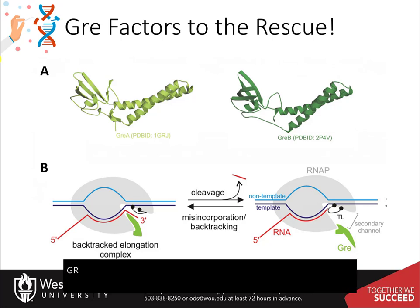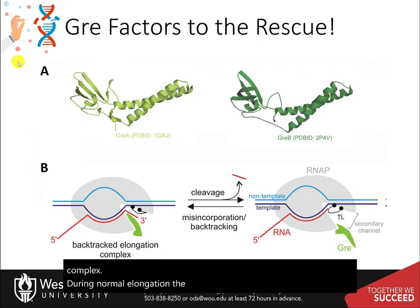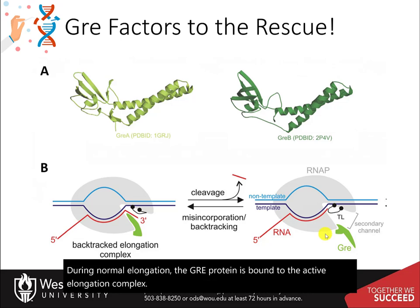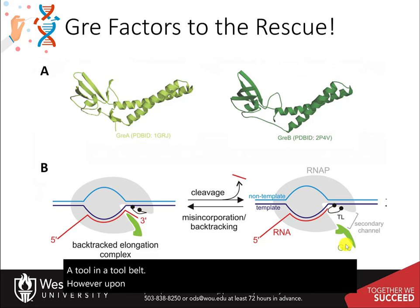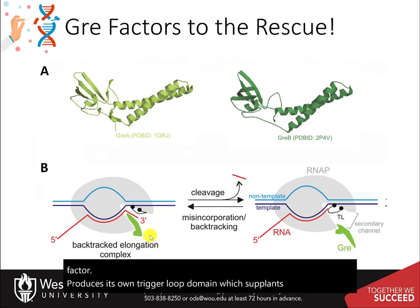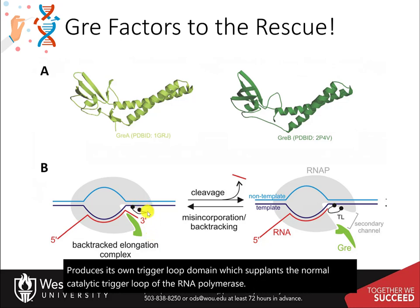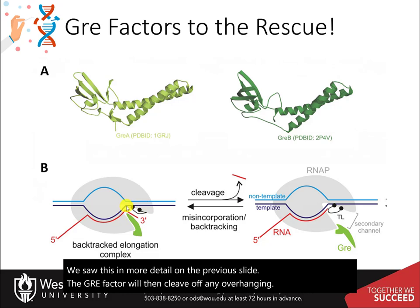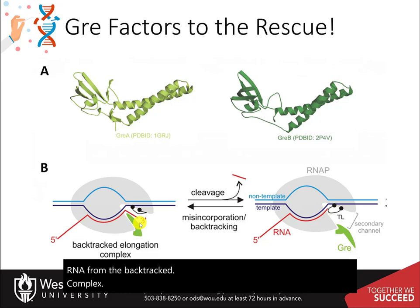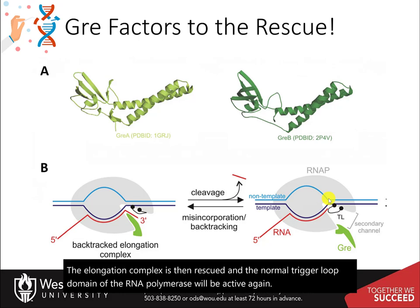GRE factors are involved in rescuing a stalled transcriptional elongation complex. During normal elongation, the GRE protein is bound to the active elongation complex, but it doesn't exert any activity on the complex — it essentially stays out of the way, like a tool in a tool belt. However, upon backtracking or nucleotide misincorporation, the GRE factor produces its own trigger loop domain, which supplants the normal catalytic trigger loop of the RNA polymerase. The GRE factor will then cleave off any overhanging RNA from the backtracked complex. The elongation complex is then rescued and the normal trigger loop domain of the RNA polymerase will be active again and can resume the elongation process.